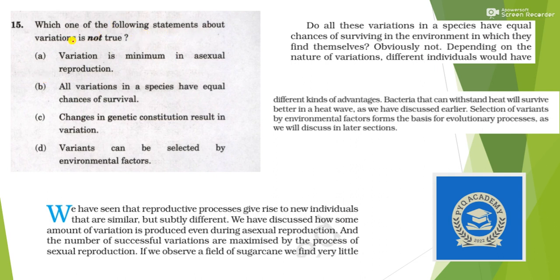Next: which one of the following statements about variations is not true? Statement one: variation is minimum in asexual reproduction — very much true. Statement two: all varieties in a species have equal chances of survival — no, obviously not, depending on the nature of variation. Statement three: changes in genetic constitution result in variation — true. Statement four: variants can be selected by environmental factors — also true. So the answer is option B.